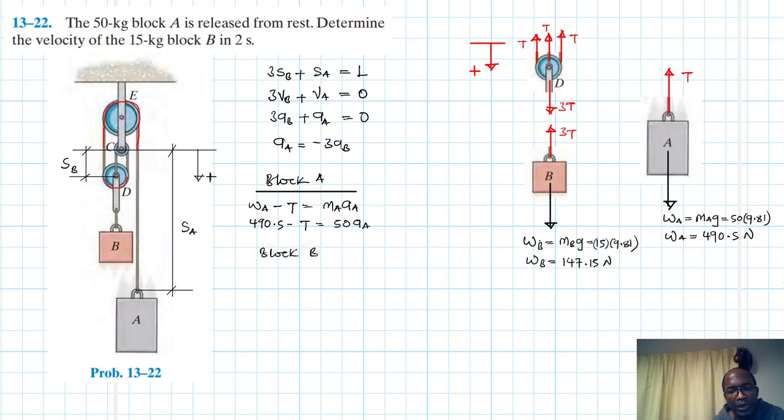Block B: we are going to have WB minus 3T equals to MB times AB. This is just equal to 147.15 minus 3T equal to 15AB.